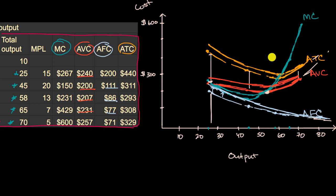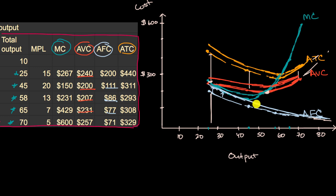Big picture: changes in variable costs or productivity would likely affect your average variable costs and your marginal costs — and since average variable cost feeds into average total cost, that would be impacted as well. But changes in just your fixed costs would affect your average fixed cost curve and your average total cost.